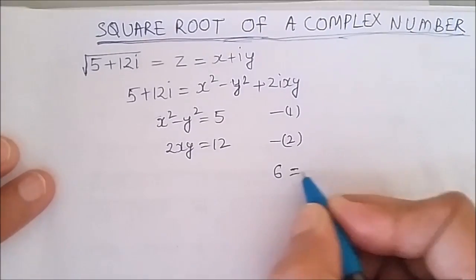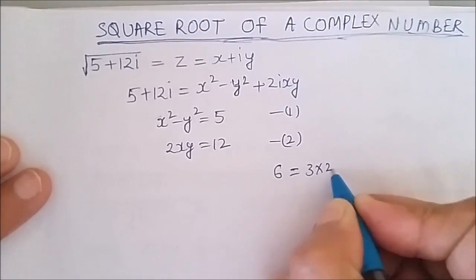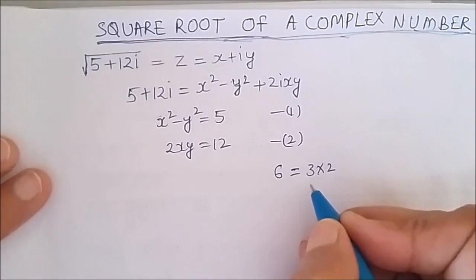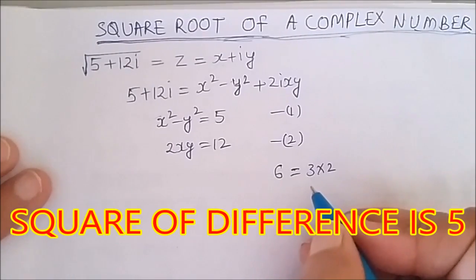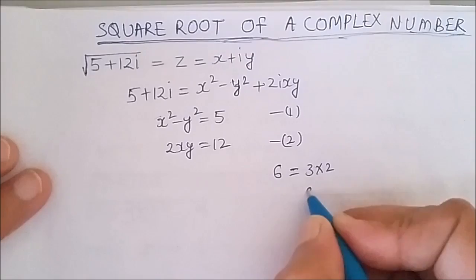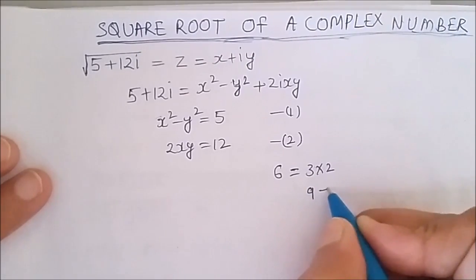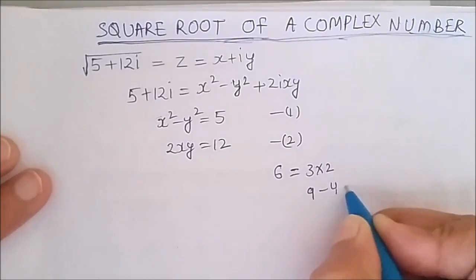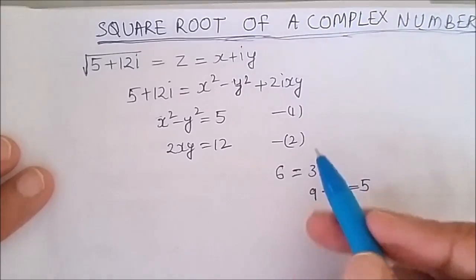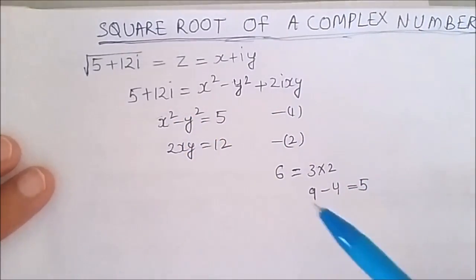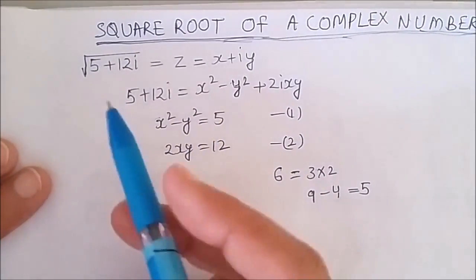Let us say 3 and 2. The factors should be in such a way that the square of their difference is 5. So square of 3 is 9 and square of 2 is 4, and the difference of this should be equal to 5, that is the real part of our original complex number.